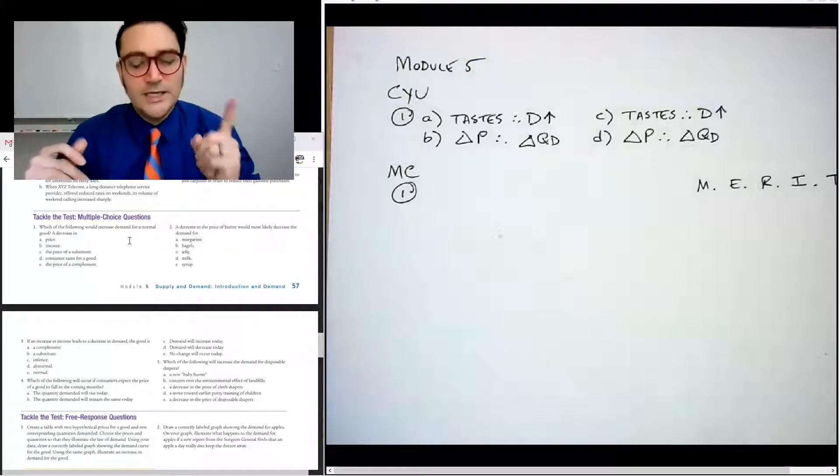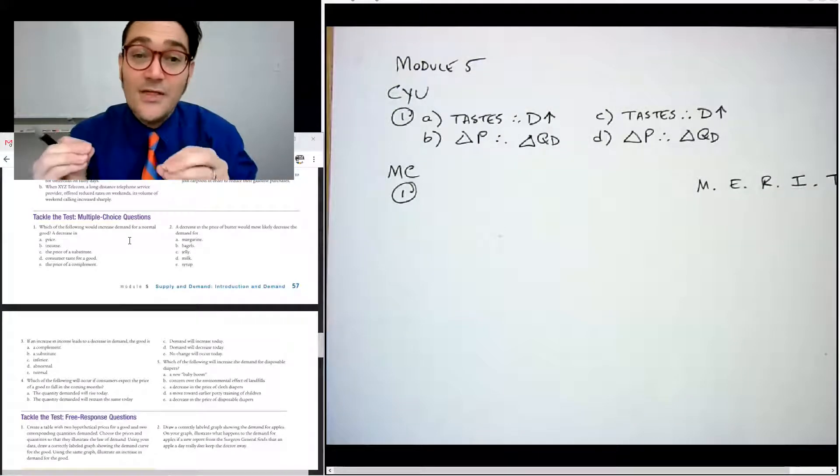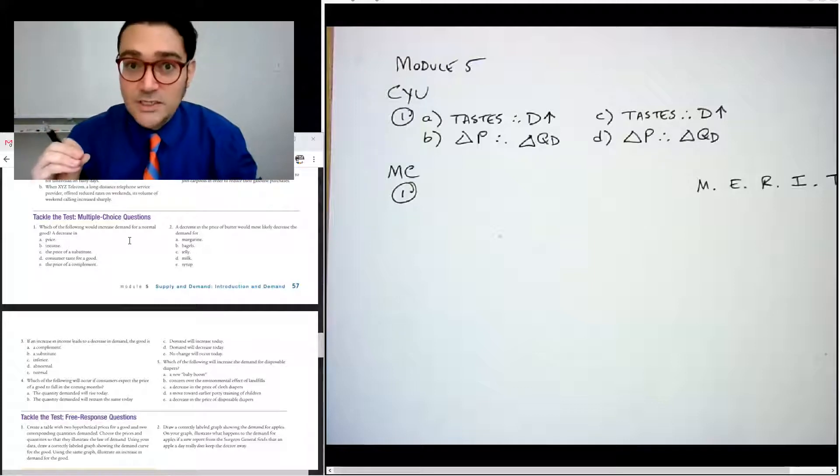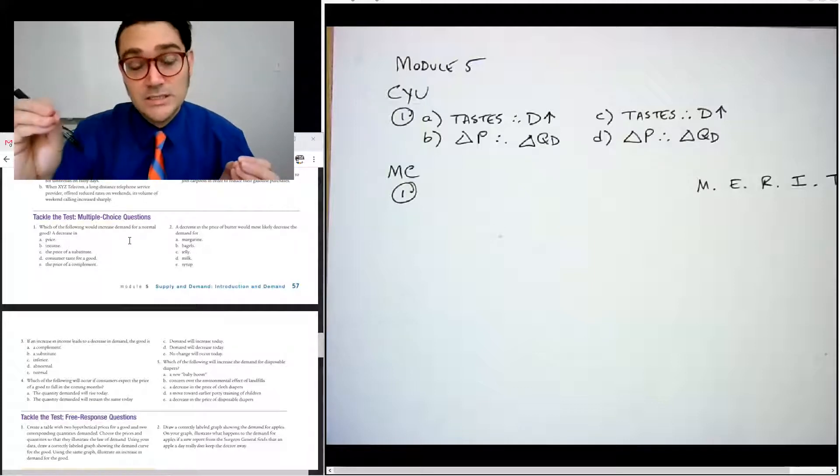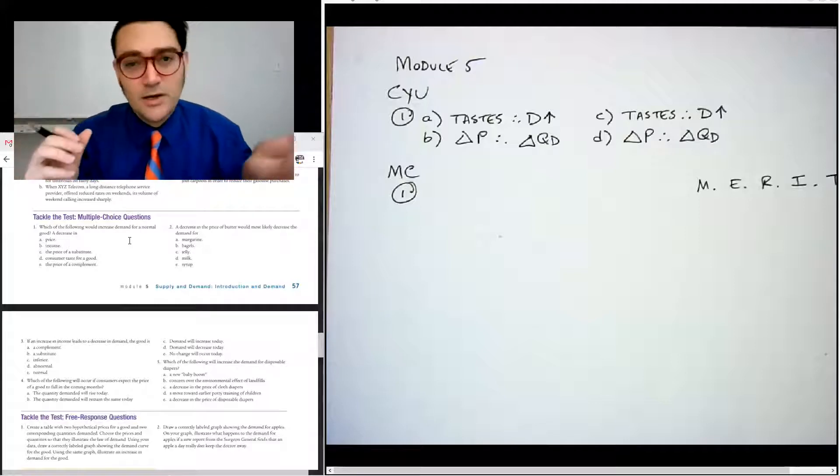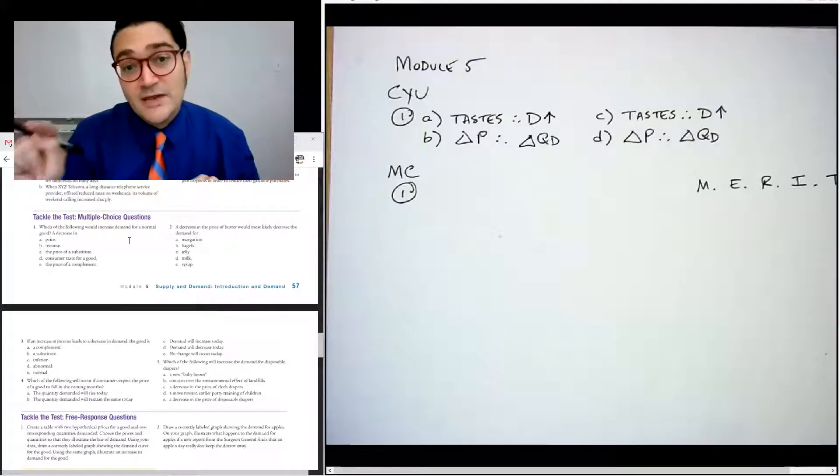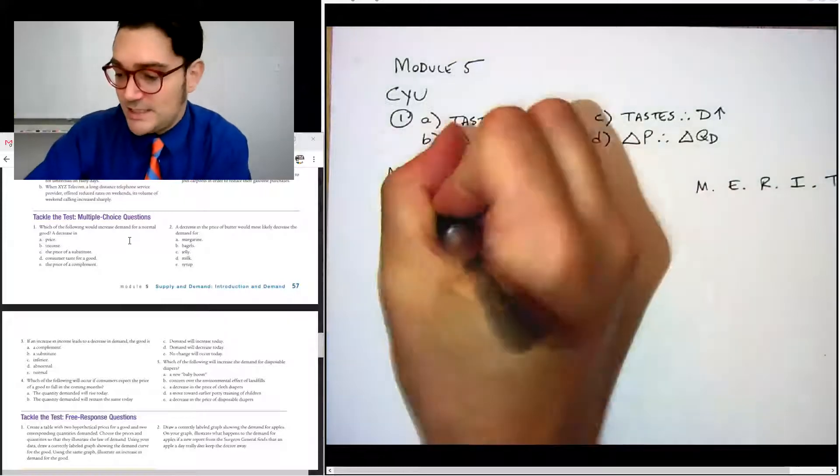The price of a complement. Now, complements are things that are bought together. So if like hot dogs and hot dog buns are the classic example, if the price of hot dogs goes down, what's going to happen to the demand for hot dog buns? Well, it'll go up because people are going to go, oh, the hot dogs are on sale. I'll buy those. And so the quantity of the hot dogs changes, but the demand for the hot dog buns actually changes. So we would say E.